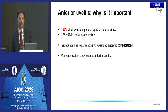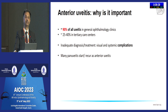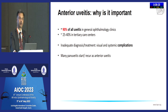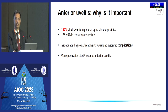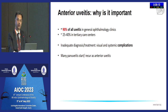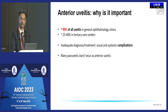Why is anterior uveitis important? The majority of people sitting here are general ophthalmologists. In a general ophthalmology clinic, more than 90 percent of all uveitis patients are likely to be anterior uveitis, and even in a tertiary care center up to 40 percent of all patients are likely to be anterior uveitis. It is not an innocuous condition. If treated inadequately or diagnosed inappropriately, it can result in very significant visual and systemic complications. Also, many cases of pan uveitis and intermediate uveitis may have a component of anterior uveitis that needs to be recognized.